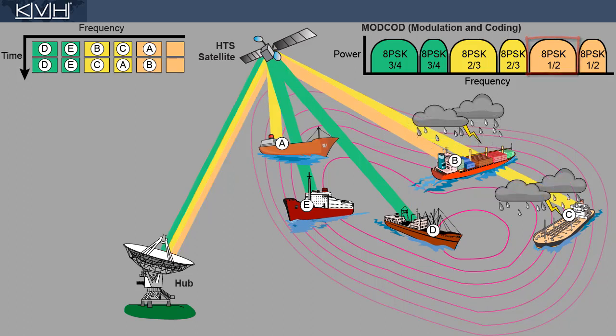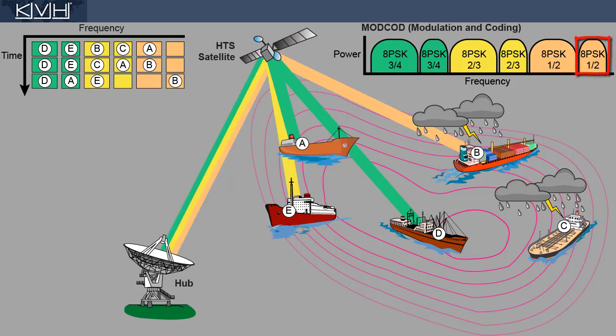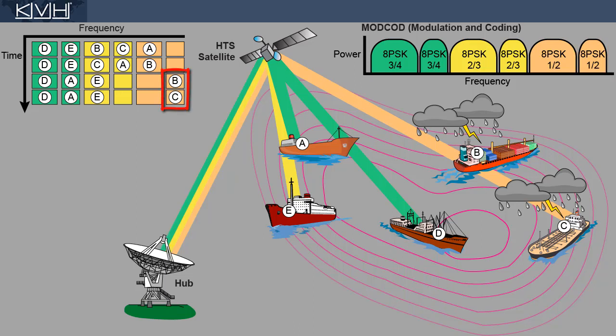When the storm increases in severity, vessel B hops again, but to an in-route that has a lower symbol rate. These smaller blocks of bandwidth are less likely to be affected by interference. Vessel C is now encountering the same conditions. Therefore, it must share the same in-route as vessel B. These two vessels will take turns transmitting and alternating time slots.